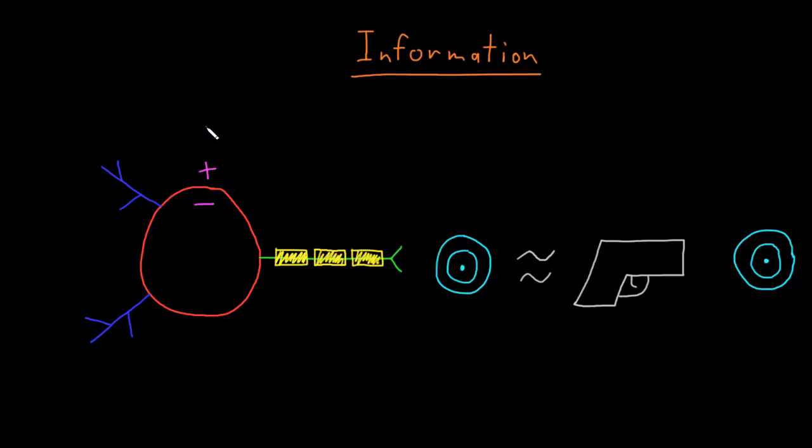This resting potential is really how the neuron is going to be able to be excitable and respond to input. I think of this as similar to loading a gun by putting a bullet in it.